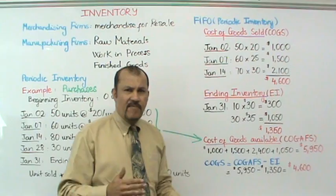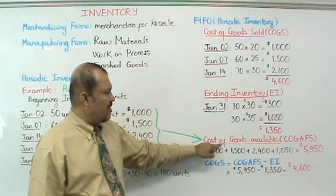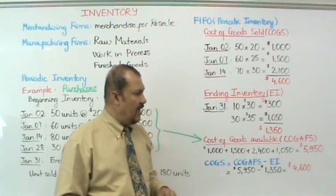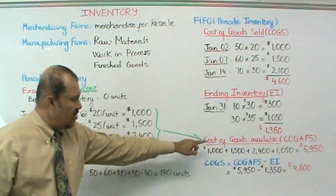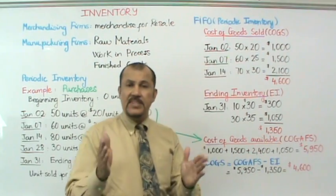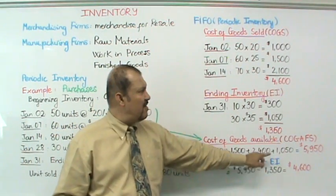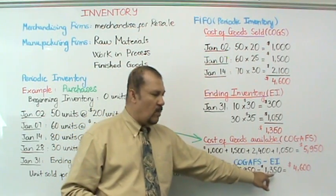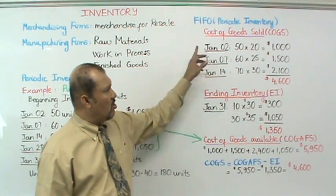There's an alternative way to calculate your cost of goods sold. First we calculate an item called cost of goods available for sale, which is nothing but taking all purchases together: $1,000 plus $1,500 plus $2,400 plus $1,050, giving you $5,950. That's your cost of goods available for sale. From that, if you subtract your ending inventory of $1,350, you get $5,950 minus $1,350, which gives you your cost of goods sold. So I've shown you two different ways to calculate your cost of goods sold.